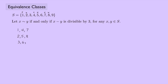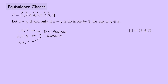These groupings are called equivalence classes — the things that are equivalent to each other. There is notation to represent an equivalence class: you select any element from the class and put square brackets around it. So [1] means the equivalence class of things equivalent to 1. You could also write [4] or [7]; it doesn't matter because they're all equivalent — you just pick one element as a representative.